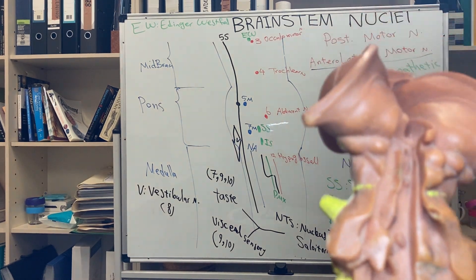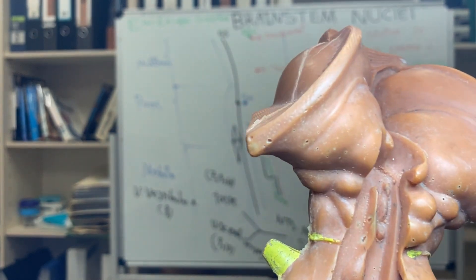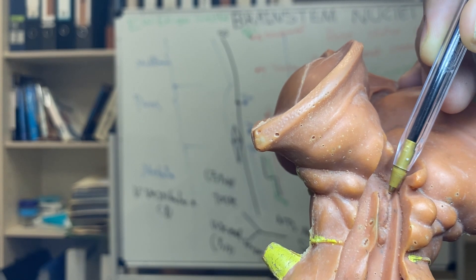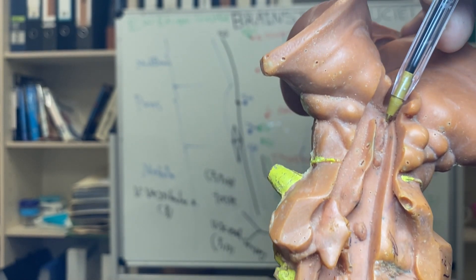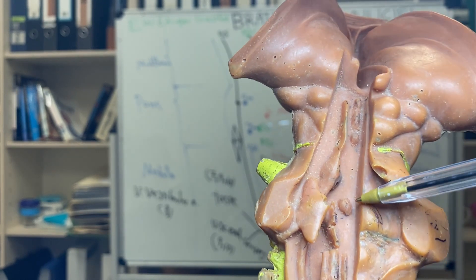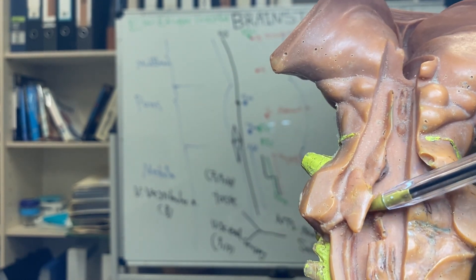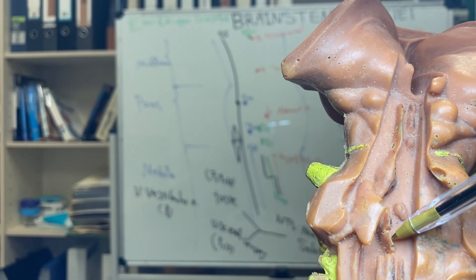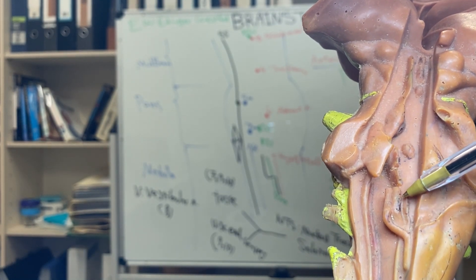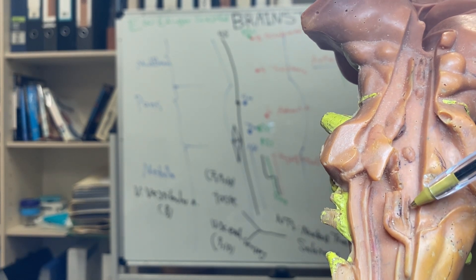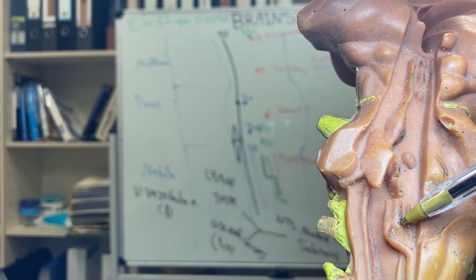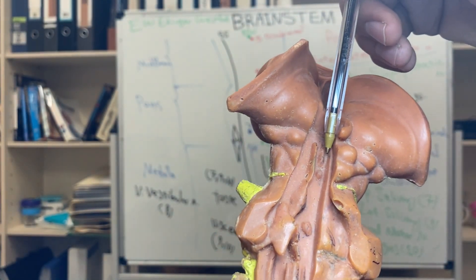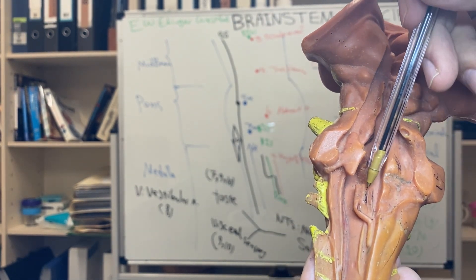Between the posterior motor and anterolateral nuclei we have the four parasympathetic nuclei. The top one is the Edinger-Westphal, very close to the oculomotors — parasympathetic 3. Going down in the pons, between six and seven you can find the superior salivary — parasympathetic 7. At the same column we have inferior salivary. Down here in the medulla, the thickest one you see is the DMX — dorsal motor nucleus of vagus — just lateral to the hypoglossal. So we have four: Edinger-Westphal, superior salivary, inferior salivary, and DMX.